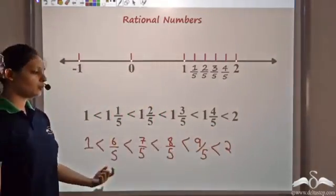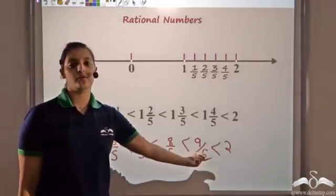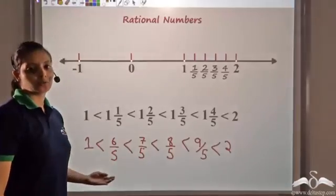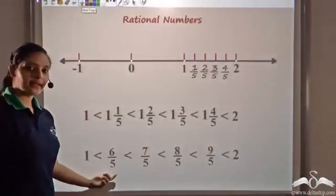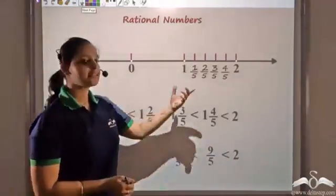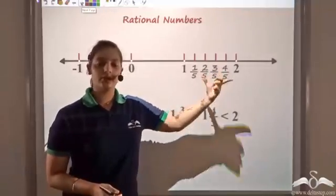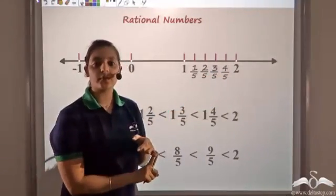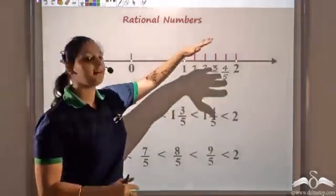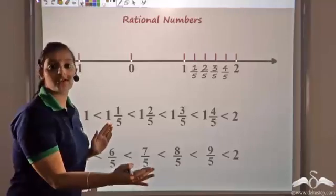So now you can see that between 1 and 2 you have got 4 rational numbers: 6 by 5, 7 by 5, 8 by 5, and 9 by 5. I had started with making 5 divisions between 1 and 2. I could have also made 10 divisions, which would give me 9 numbers between 1 and 2. Similarly, 100 divisions could actually give me 99 numbers between these 2 numbers.